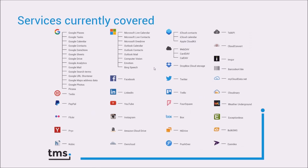This is an overview of the cloud services currently covered in the TMS Cloud Pack. There are many services offered by Google, like Google Drive, Google Mail, Google Contacts and Google Calendar. Also quite some services from the Microsoft cloud, including Microsoft OneDrive and the Microsoft PIM services, Live Calendar and Live Contacts. There are many others like YouTube, social media cloud services such as Facebook, Twitter, LinkedIn, Foursquare, cloud storage services such as Box, Amazon Cloud Drive, HiDrive, and miscellaneous services like SMS messaging, weather information, and PayPal payments.